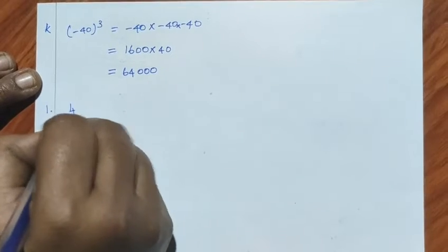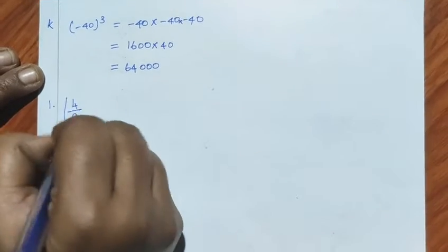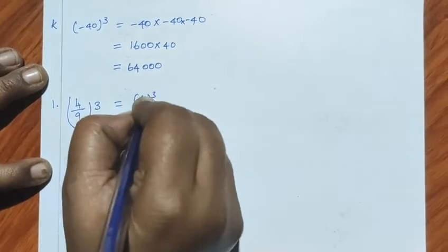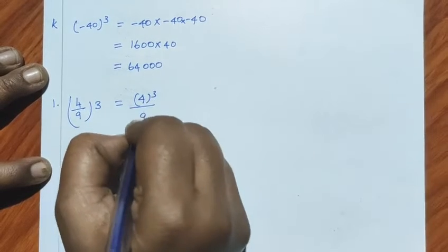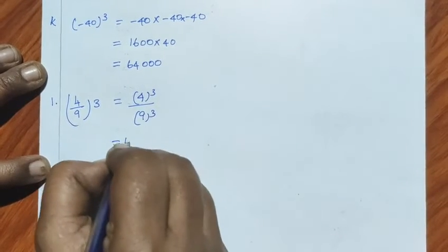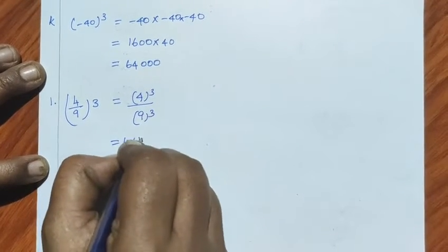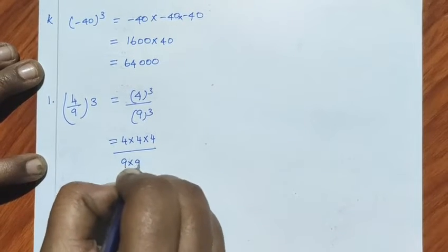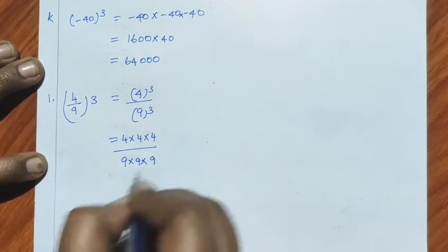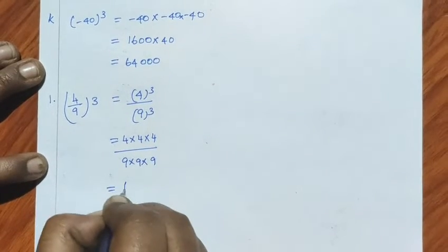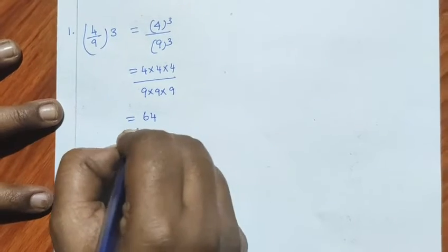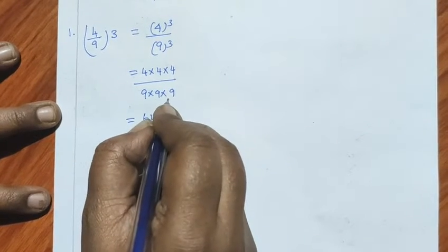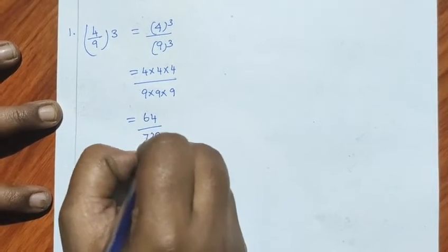Next, 4 by 9 the whole cube: 4 the whole cube divided by 9 the whole cube. So 4 into 4 into 4 divided by 9 into 9 into 9. 4 fours are 16, 16 fours are 64. 9 nines are 81, 81 into 9 is 729. Answer: 64 by 729.